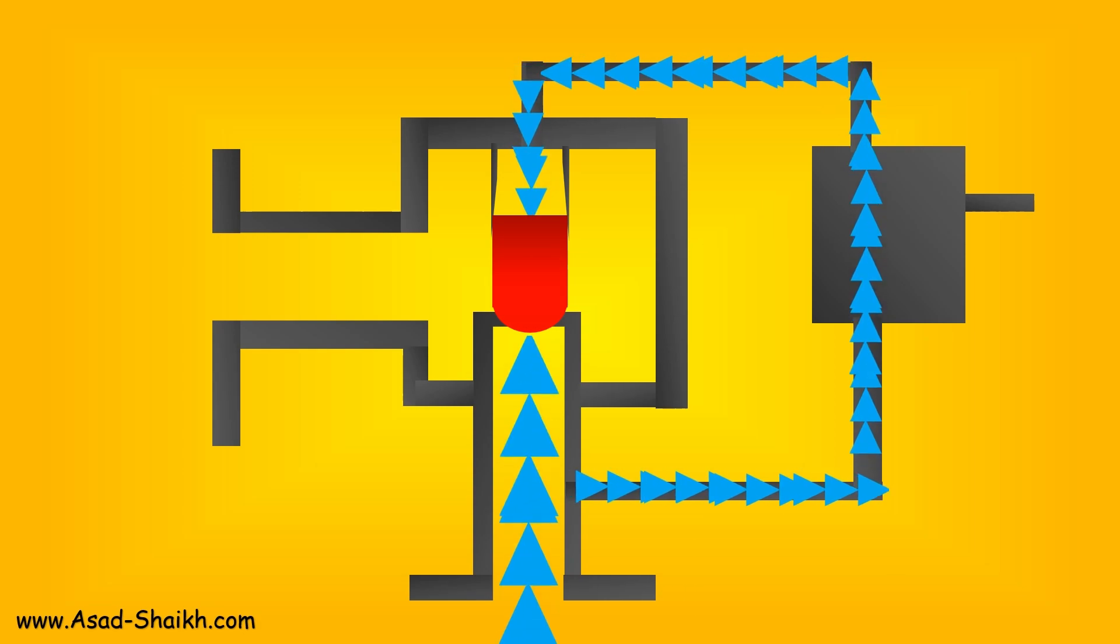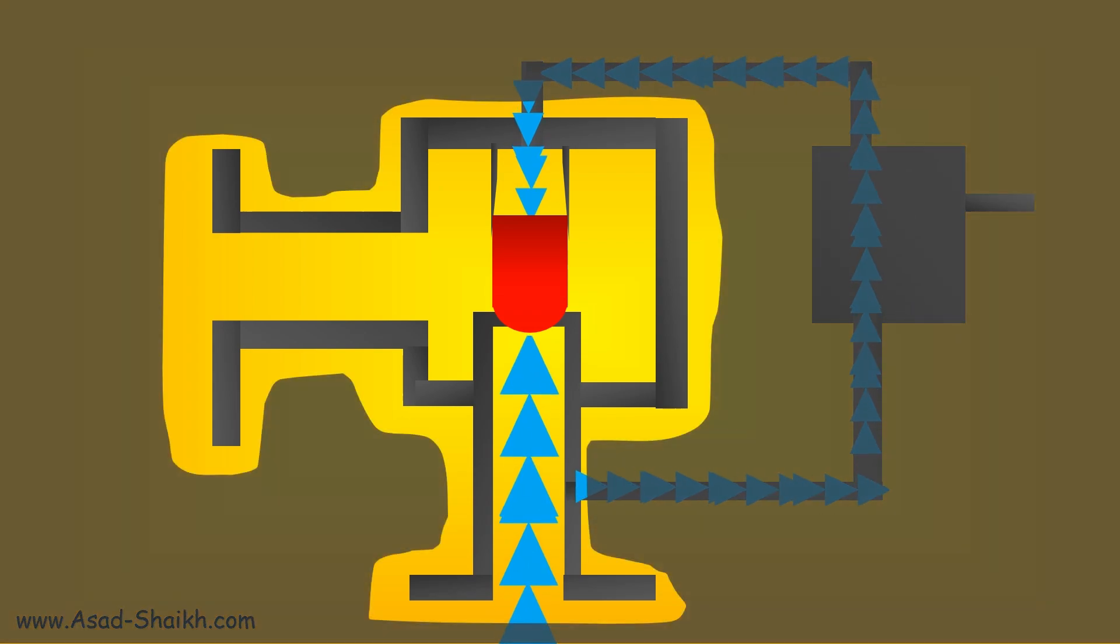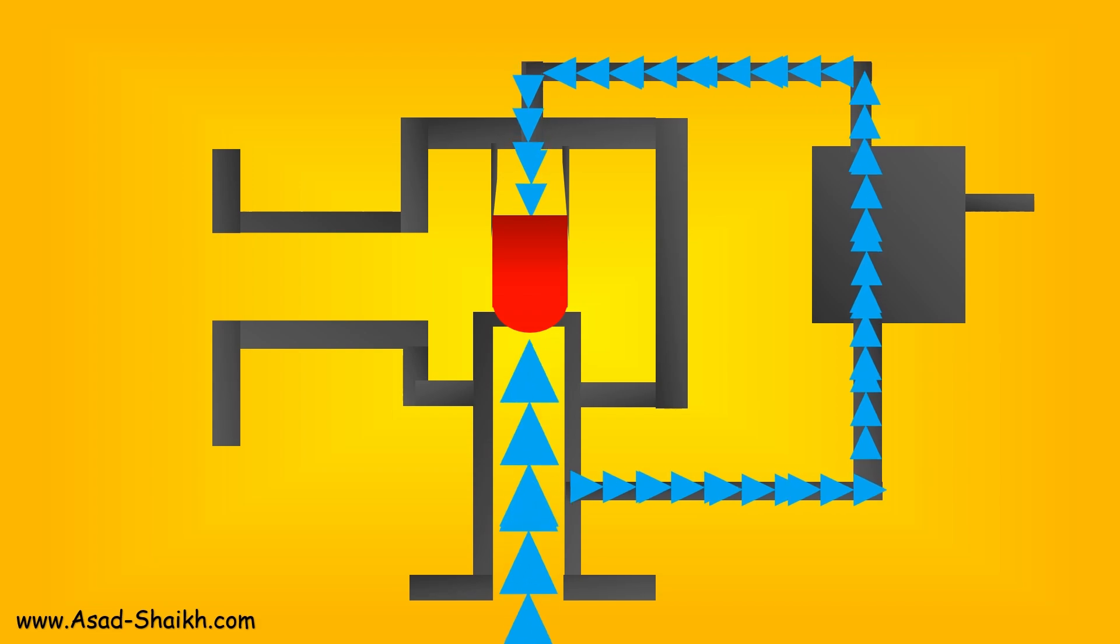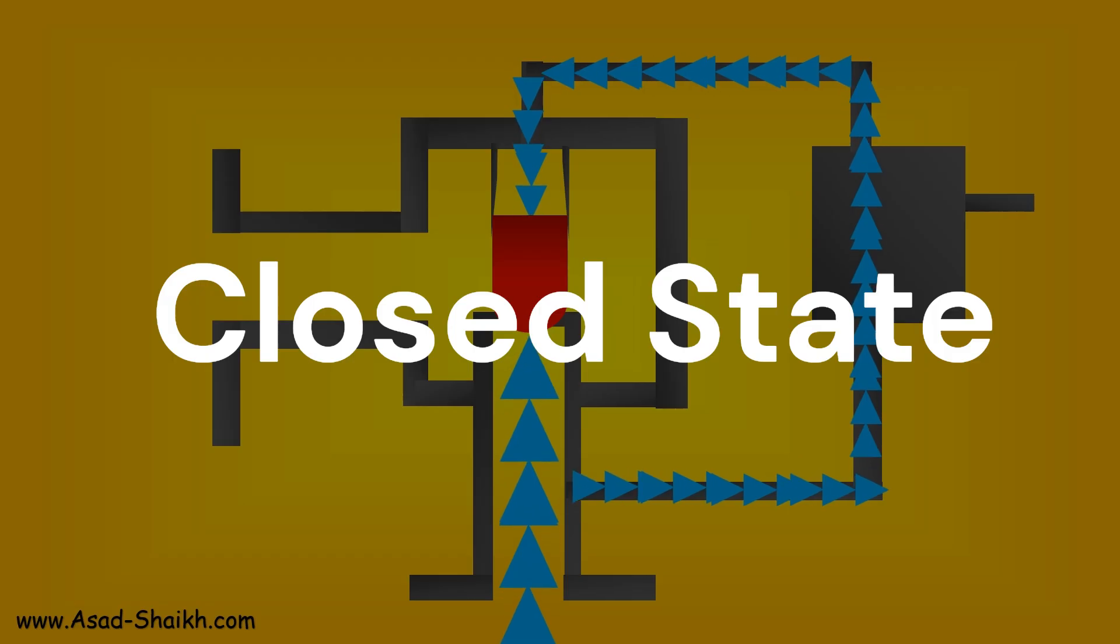This is how a pilot relief valve is in its closed position. The two most important components here are the pilot valve's main valve and the pilot valve. Now let us look at how this valve stays in the closed state.